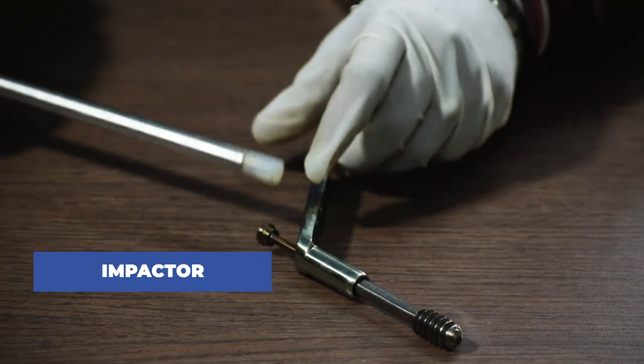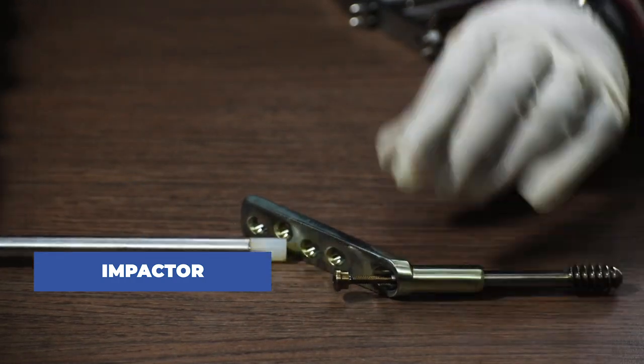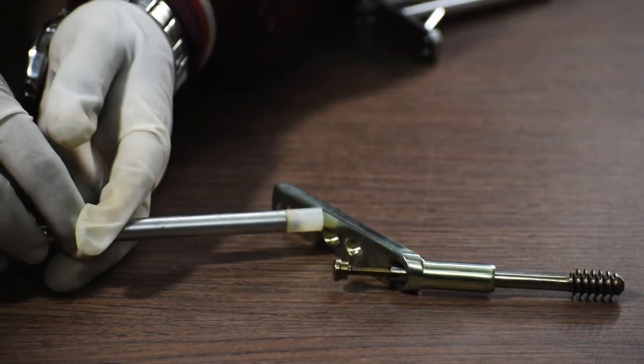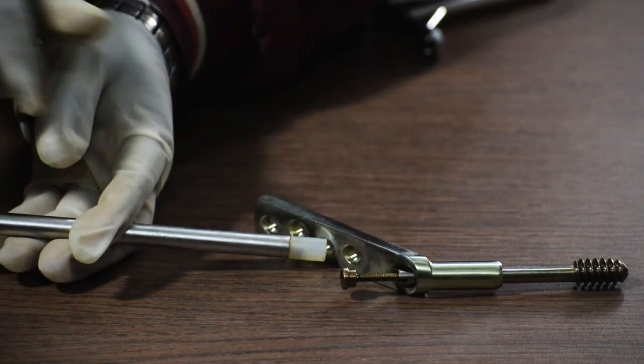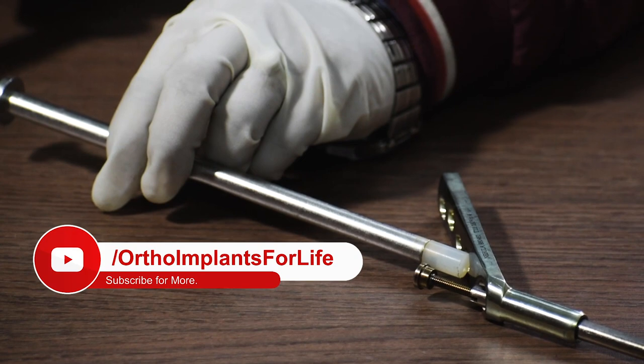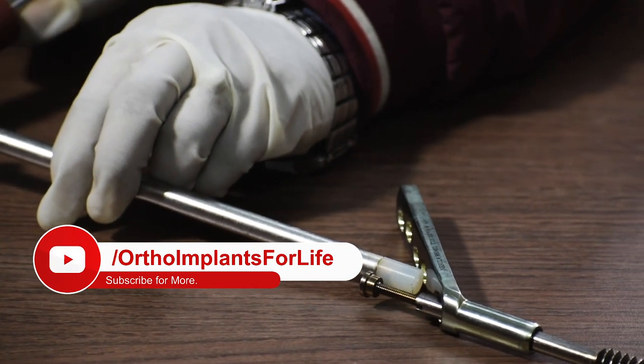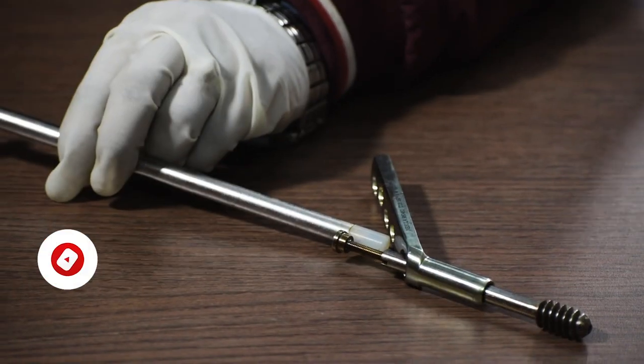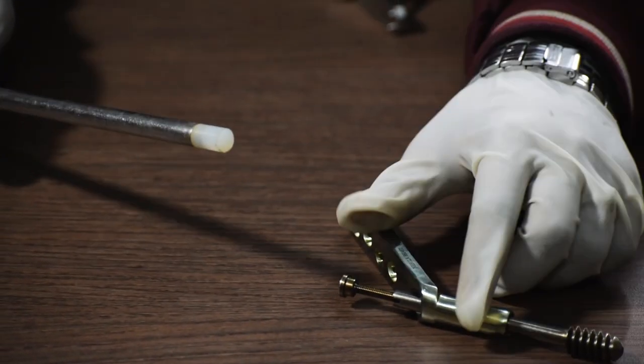Now we are going to use the impactor to punch the plate so that it is properly fixed with the bone. We will place the impactor like this and we will start punching gently from the other end of the impactor for the proper placement of the plate.